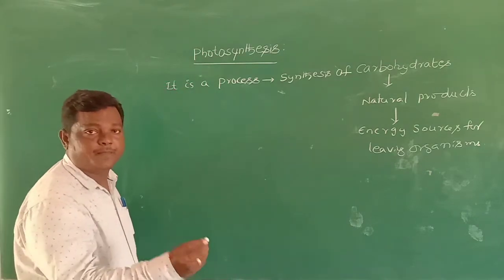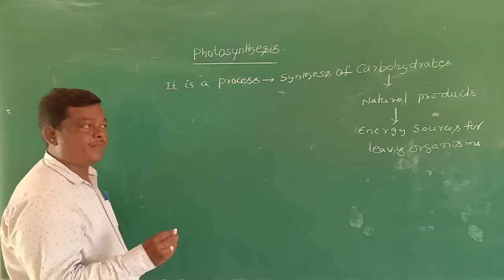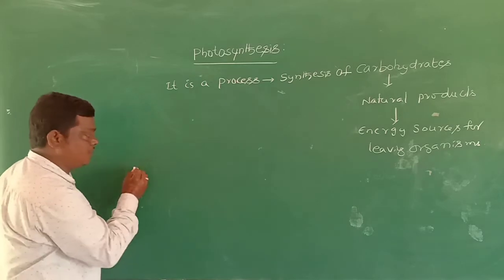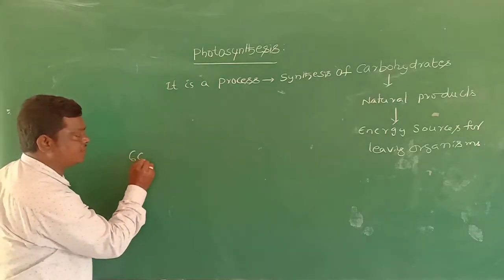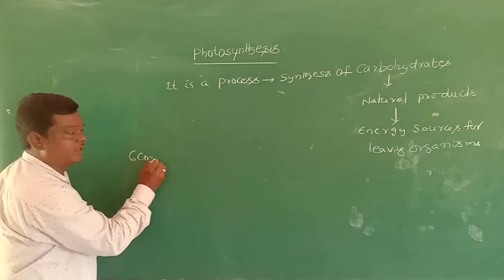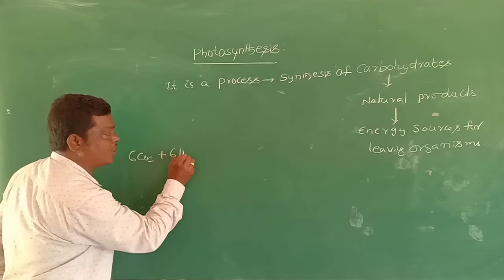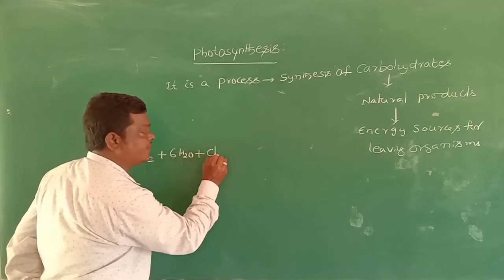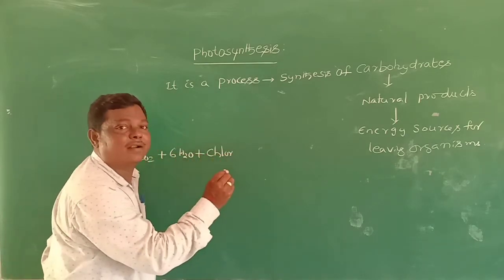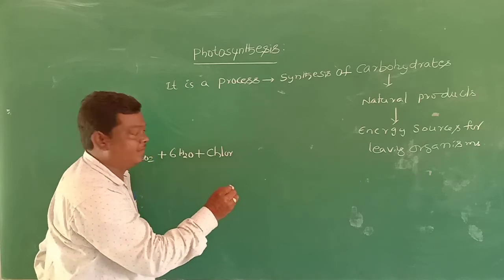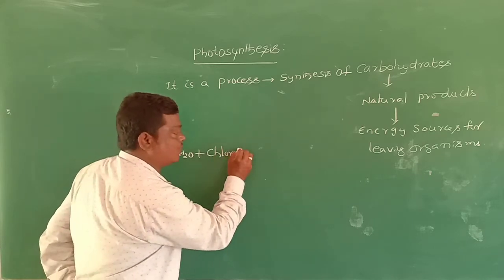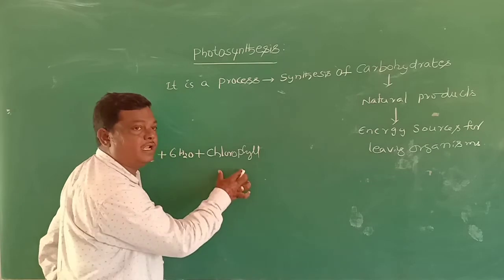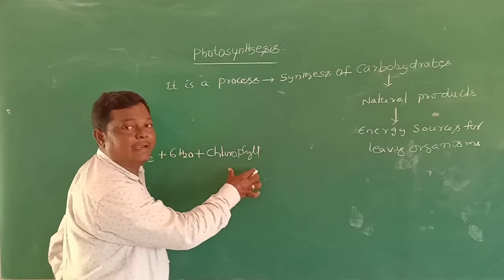Let us see the chemical reaction for photosynthesis. We have 6 moles of CO₂ and 6 moles of water molecule, plus chlorophyll. Chlorophyll is a green coloured pigment available in green plants.